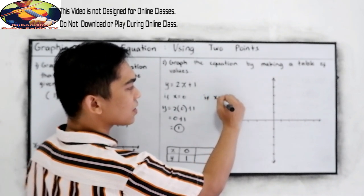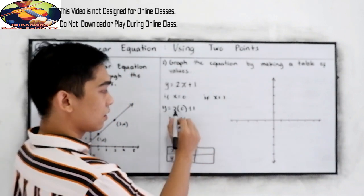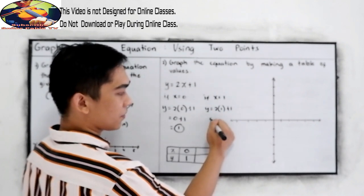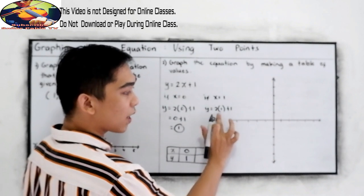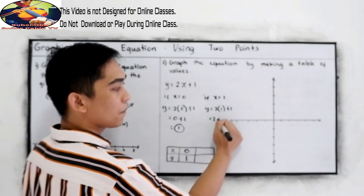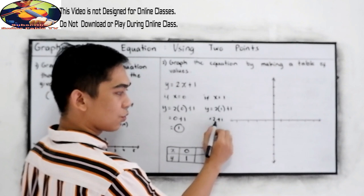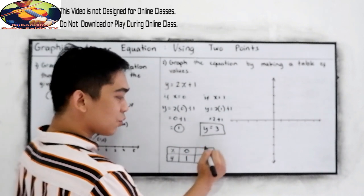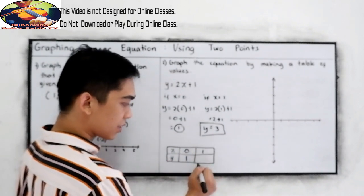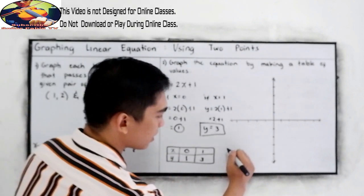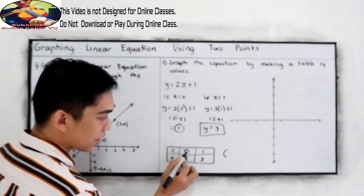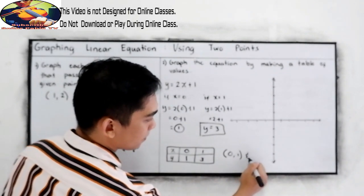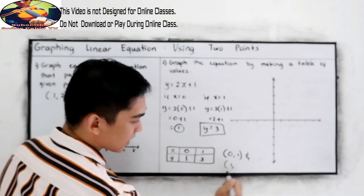If x is equal to positive 1, so y is equal to 2 times 1 plus 1. So 2 times 1, that is 2, plus 1, 2 plus 1 is 3. So if x is 1, therefore y is 3. Now our points are 0, 1, and 1, 3.